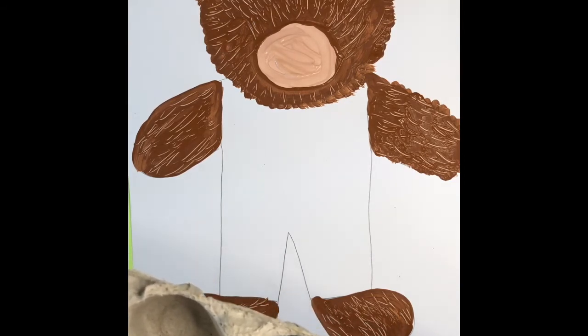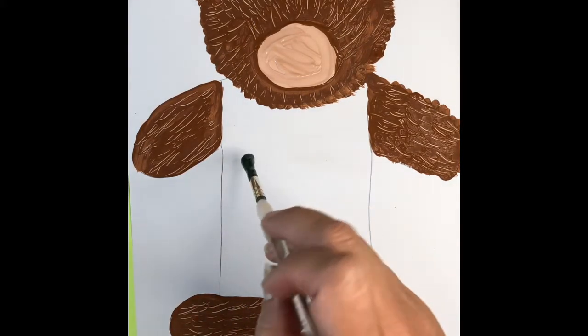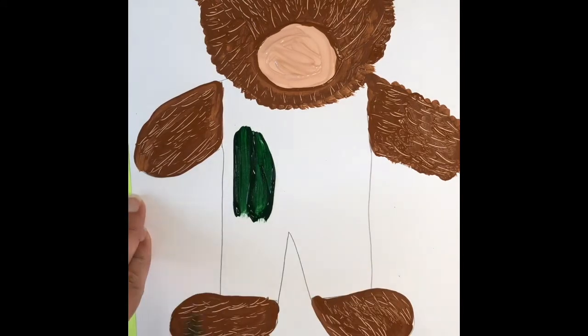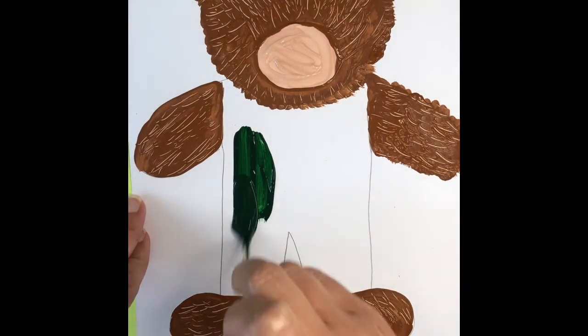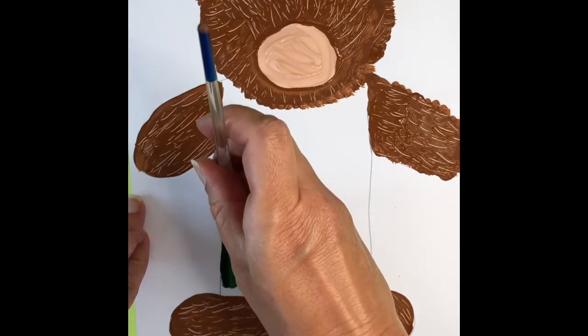Now, when I put the paint on, I'm putting it in the middle part of his body here and I want it to be nice and smooth. I'm going to paint one side and then I'm going to add in that corduroy texture.